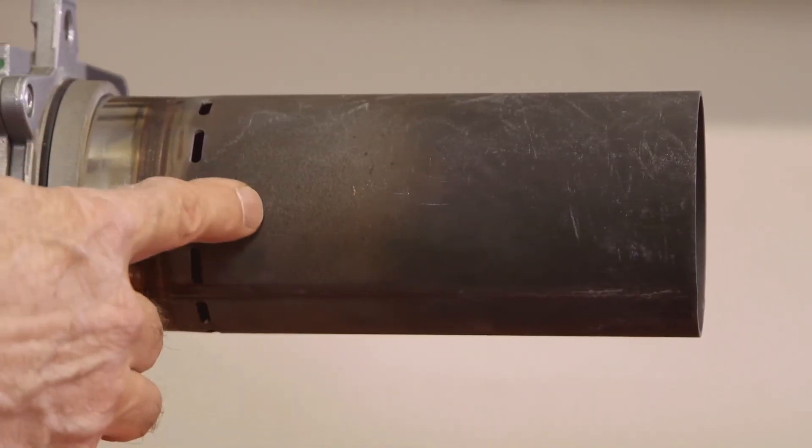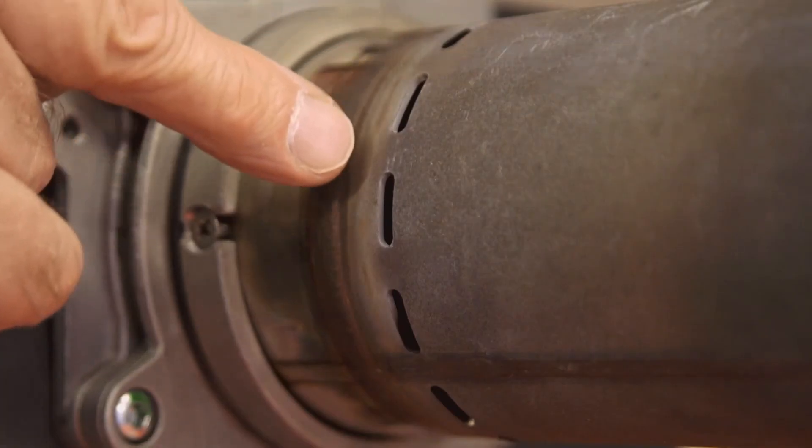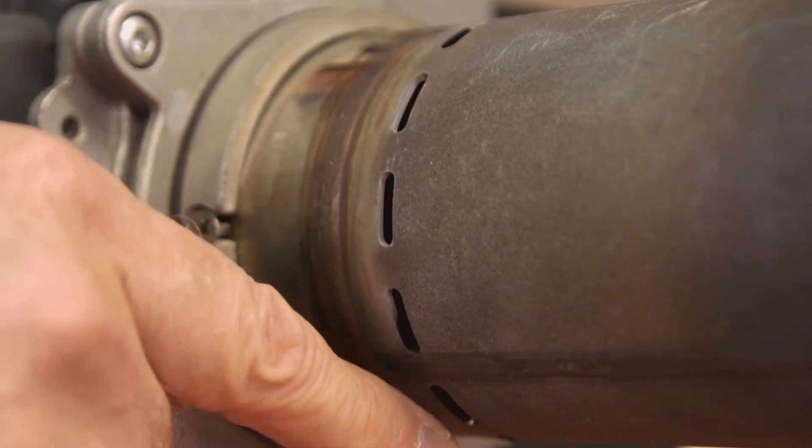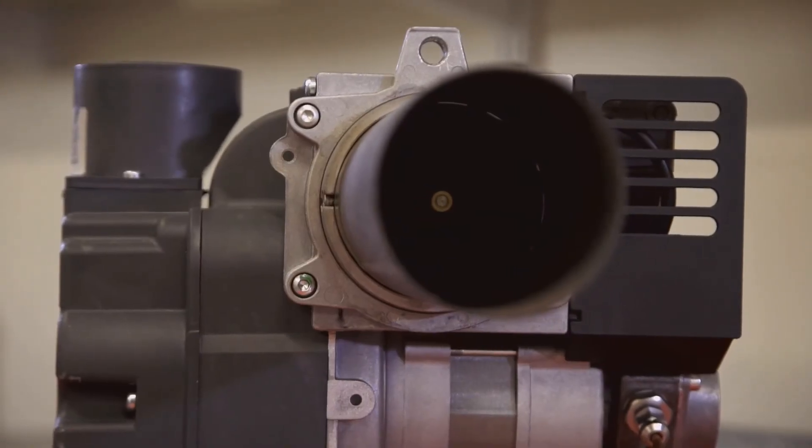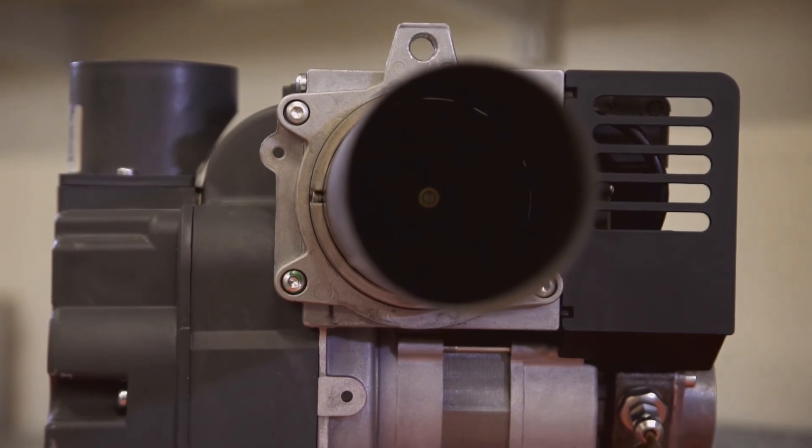The combustion head has slotted holes here. When the burner is firing the combustion gases are recirculated through these holes producing a cleaner blue flame with lower emissions.